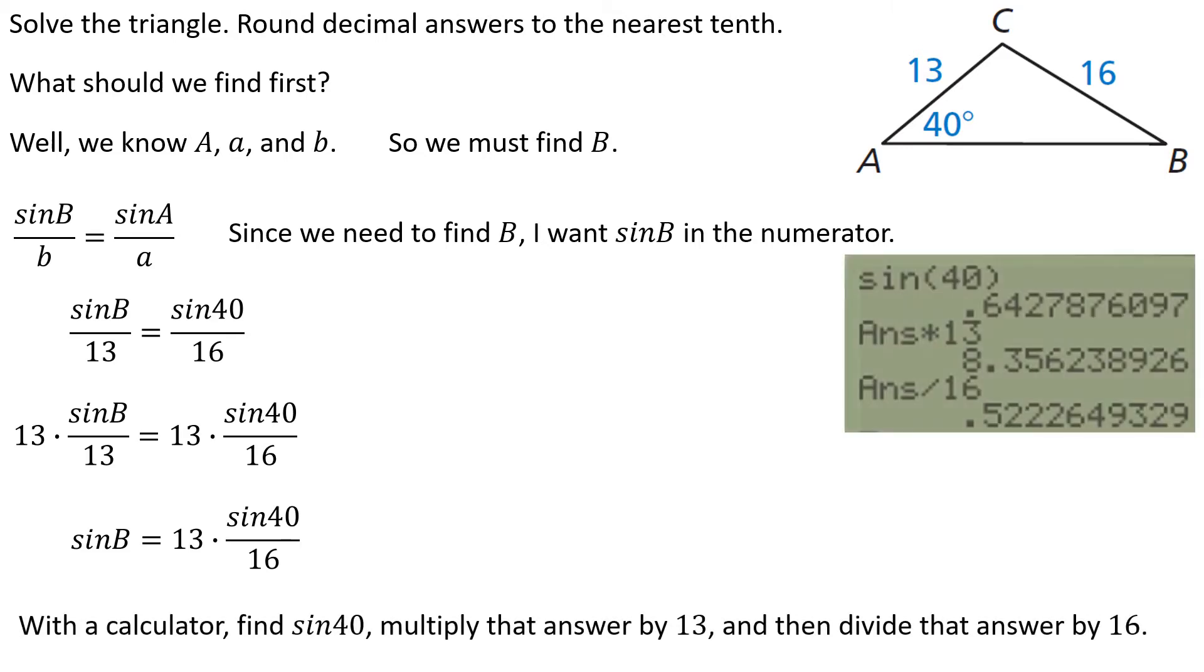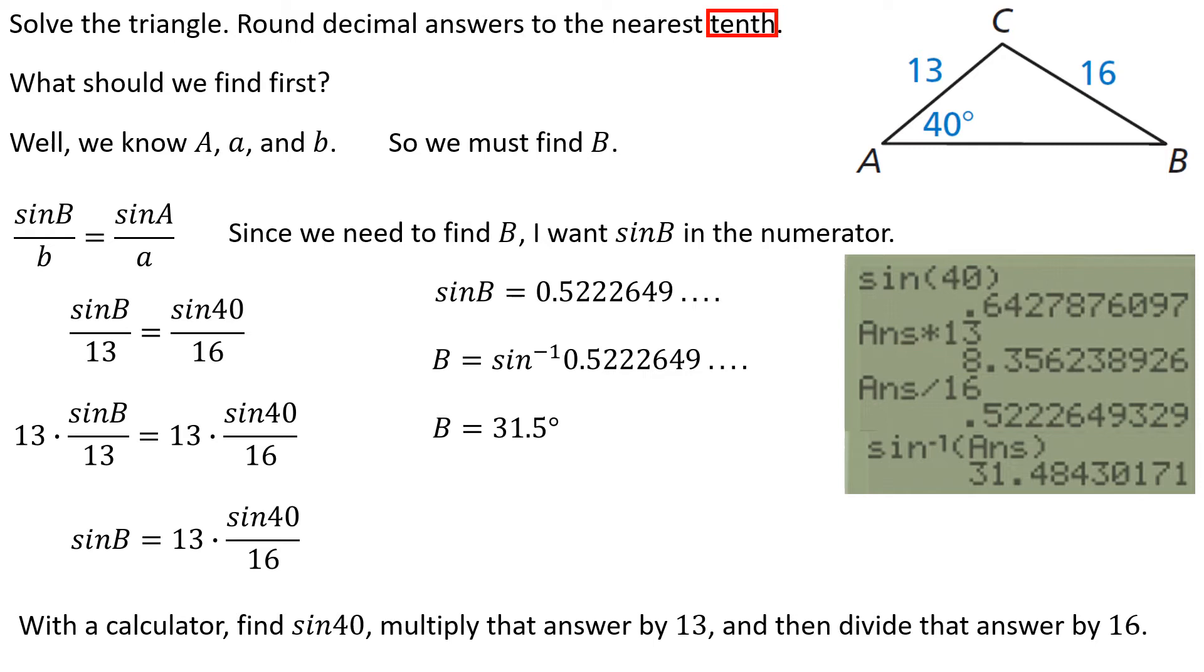So now sine of B equals 13 times the ratio of sine of 40 to 16. Grab a calculator. Make sure it is in degrees. Sine of 40 degrees times 13 divided by 16. And so I know the sine of B is about 0.5222. Oh wait, I want angle B, not the sine of angle B. So if I want angle B, I have to do the inverse sine of that decimal. So the inverse sine of that decimal gets me approximately 31.5 degrees. Notice this time the directions do ask for their tenth. And so I can add that to my diagram.